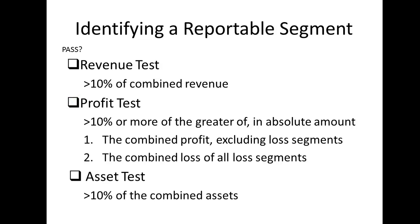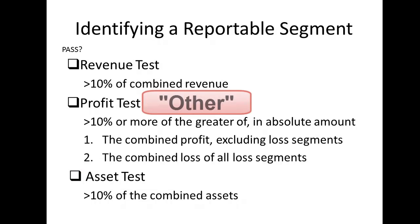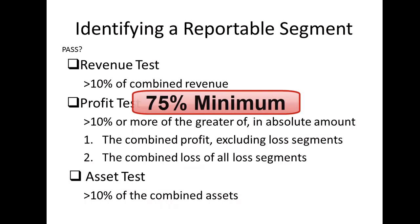And finally, the asset test. Combine — don't consolidate — the assets of the operating segments and calculate the 10% threshold. Those segments with assets in excess of the threshold are reportable segments. Any segments that fall outside of these guidelines have their results combined under a separate header of 'other' in the segment disclosures, provided that at least 75% of the company's total external revenues is included in a reportable segment. If this is not the case, then additional segments will be added as reportable segments until the 75% threshold is met.